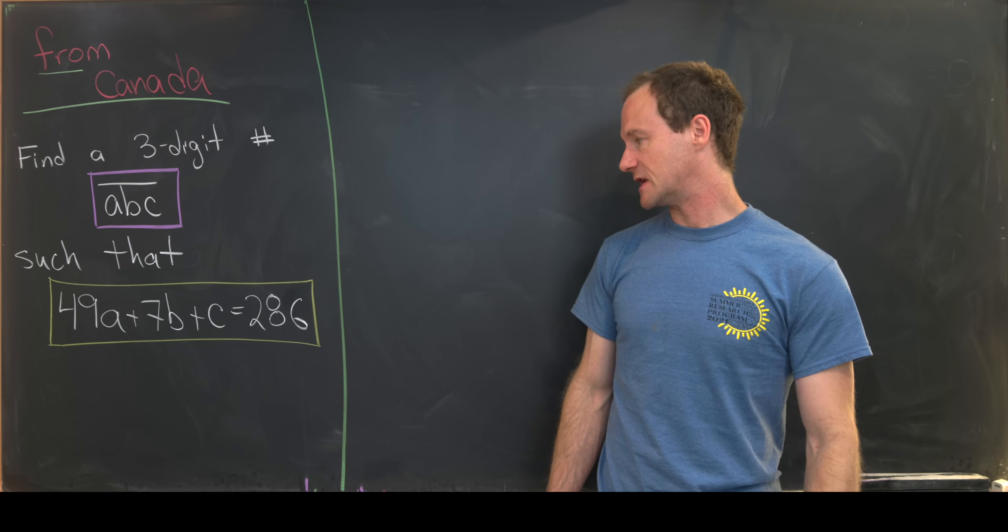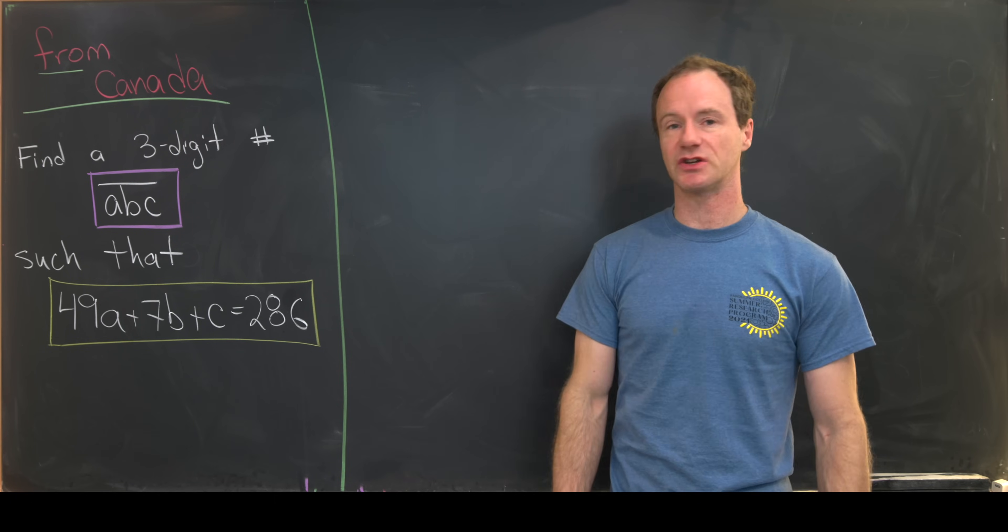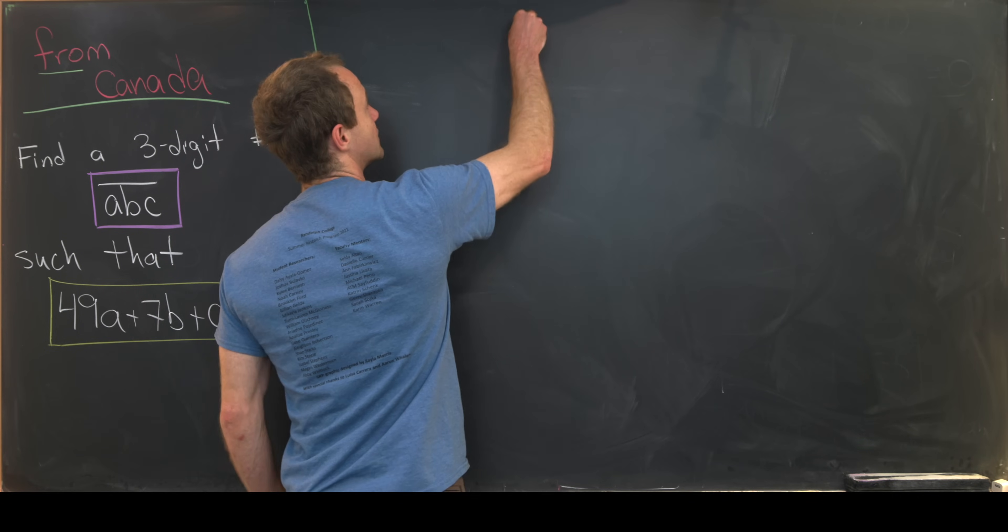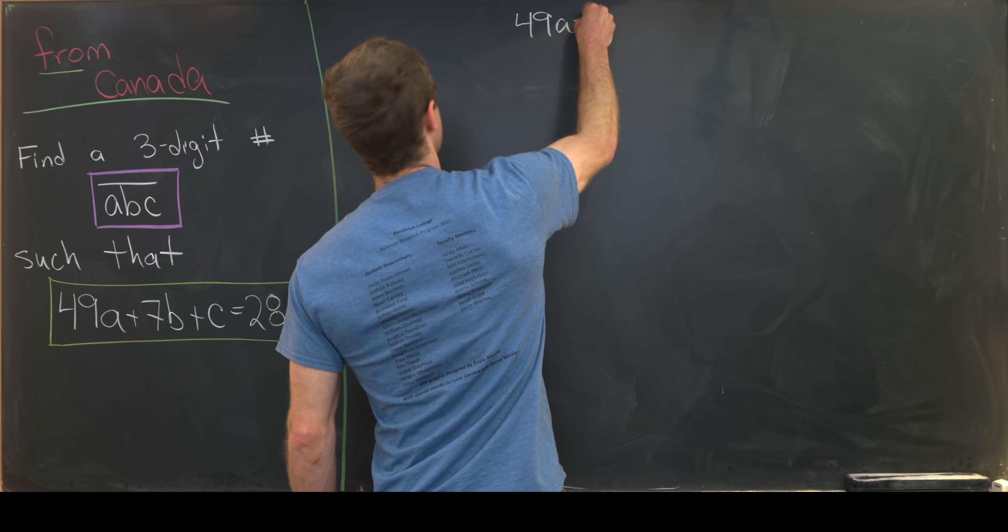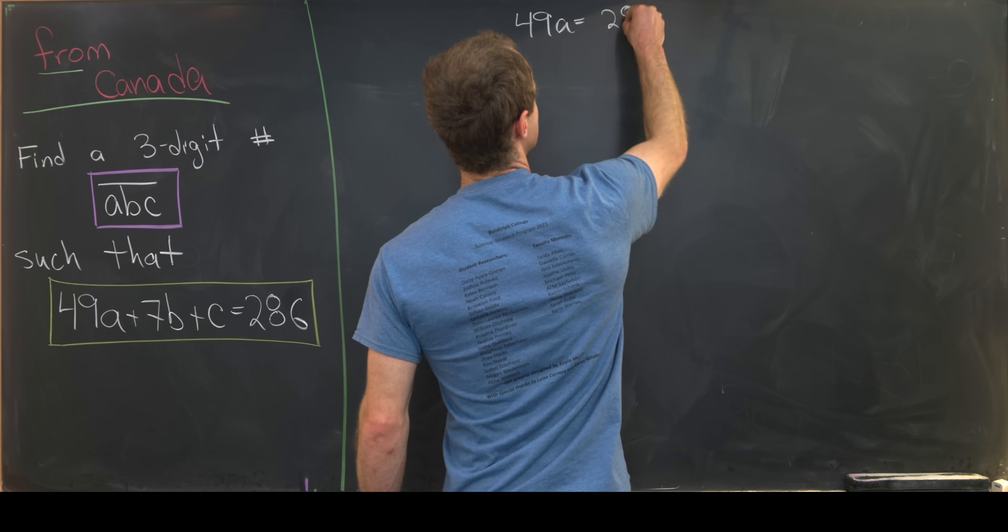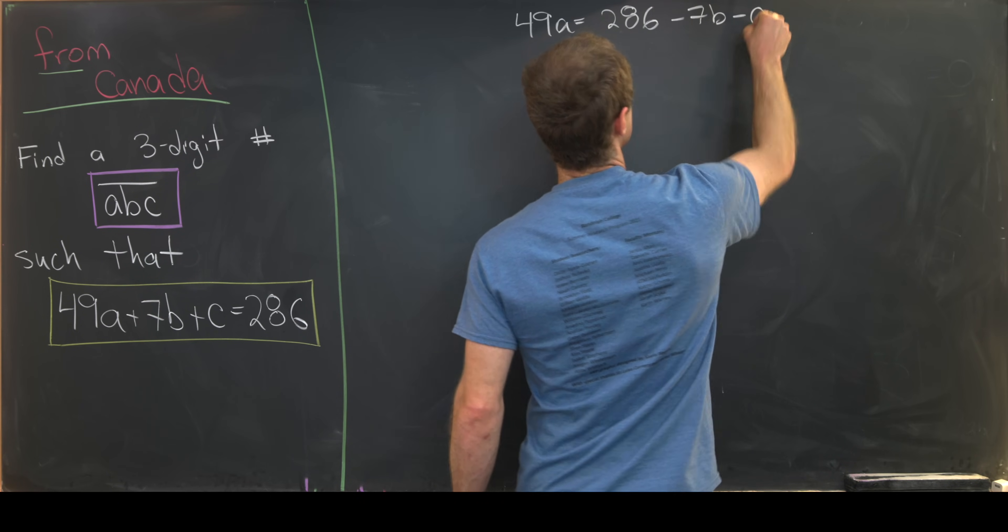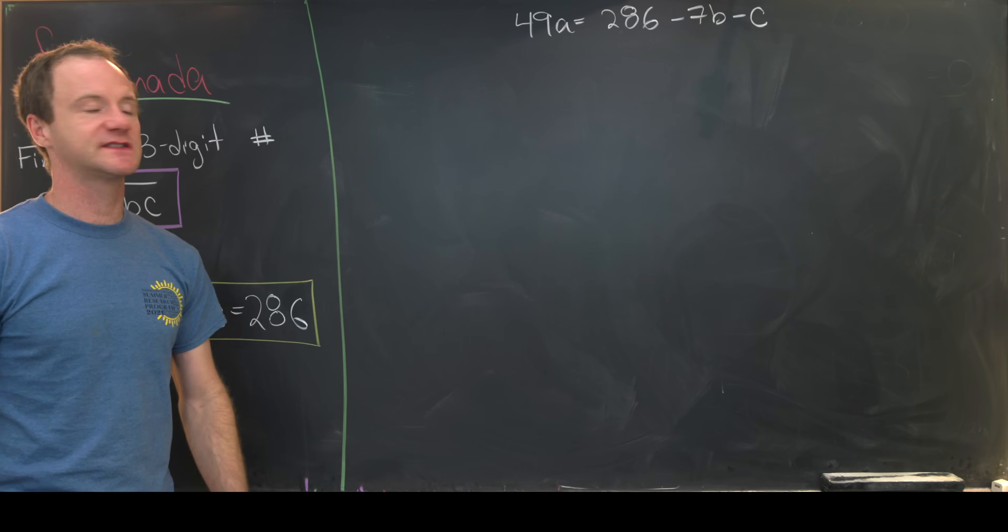Okay, so let's maybe get to it. I'll take this equation and then solve it for 49A. That means we can write 49A as 286 minus 7B minus C.